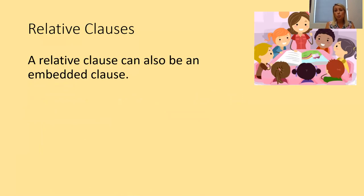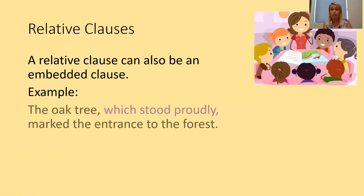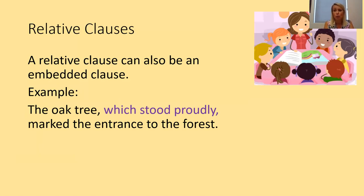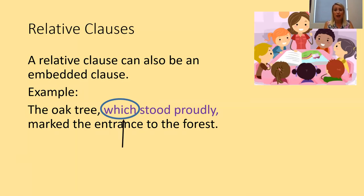A relative clause can also be an embedded clause — that means it doesn't come at the end of the sentence but in the middle, embedded after the noun it's modifying. For example, the main clause is 'The oak tree marked the entrance to the forest.' The noun being modified is 'the oak tree', so the relative pronoun comes after that noun, forming an embedded clause — sometimes called a dropping clause — using the relative pronoun 'which' to modify the tree.